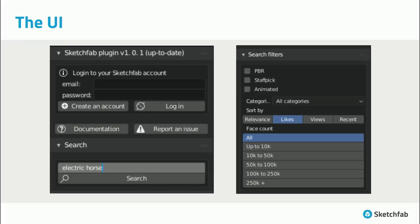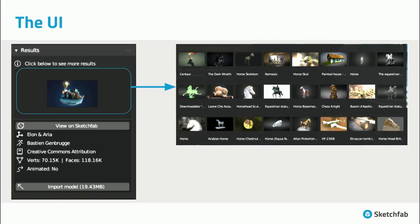The interface includes a login section — you need to authenticate to download content from Sketchfab — then a search bar with filters for polygon count and categories. The results panel uses familiar widgets from matcaps and brushes, showing model thumbnails. You can click to view the model on Sketchfab's viewer to inspect topology, textures, and materials. Basic info like name, author, license, and animation count are shown in the plugin.